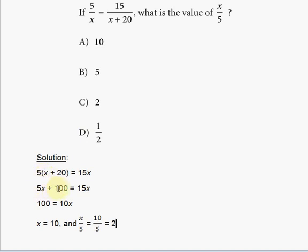You can subtract 5x on both sides and you're going to have 100 is equal to 10x, and x will simply be 10 because both sides will be divided by 10.